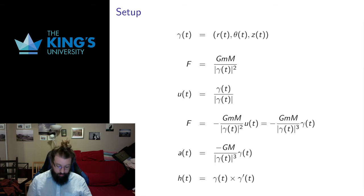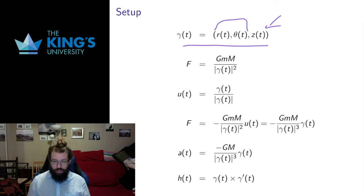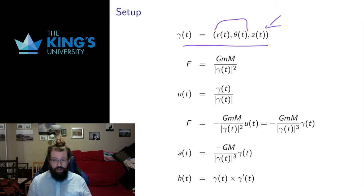I'm going to let this curve be in three dimensions in cylindrical coordinates — so still in polar coordinates in the first two dimensions — but with the possibility of a third dimension, because orbital motion happens in three dimensions and I don't know a priori that the orbiting object won't move in the third dimension. There are also calculation advantages to doing it this way using the cross product in R3.